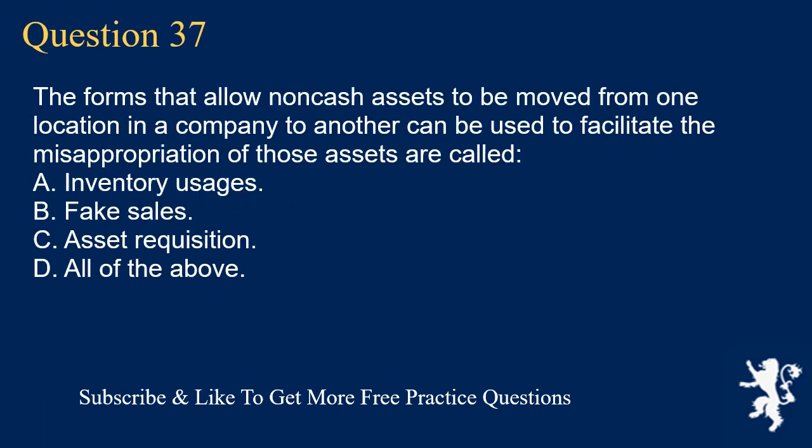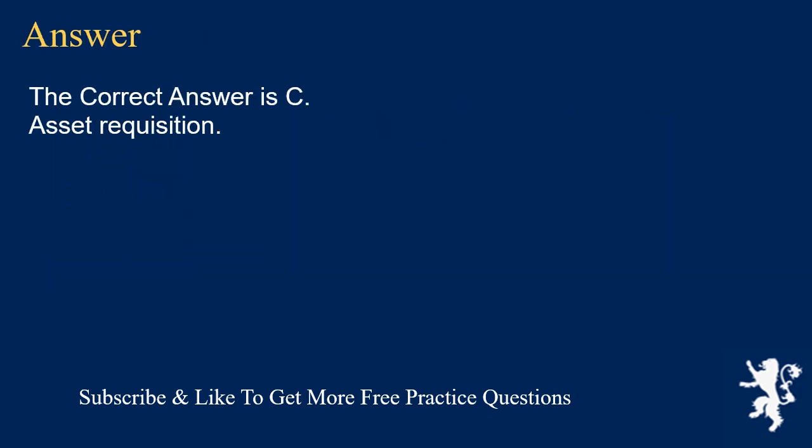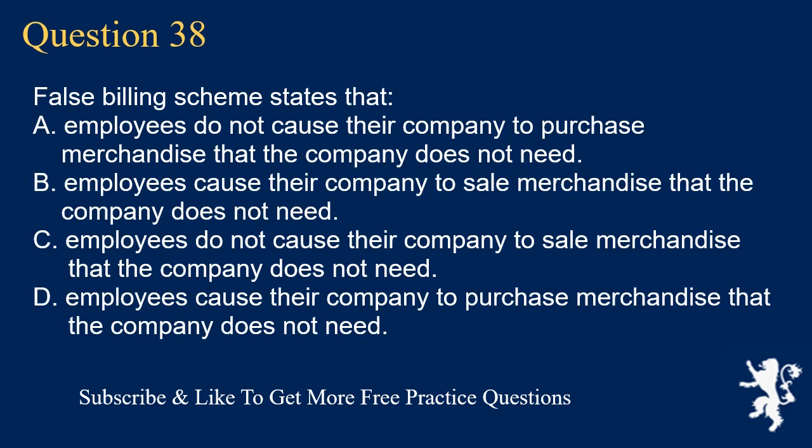Question 37: The forms that allow non-cash assets to be moved from one location in a company to another, which can be used to facilitate the misappropriation of those assets, are called: A. Inventory usages. B. Fake sales. C. Asset requisition. D. All of the above. The correct answer is C. Asset requisition.